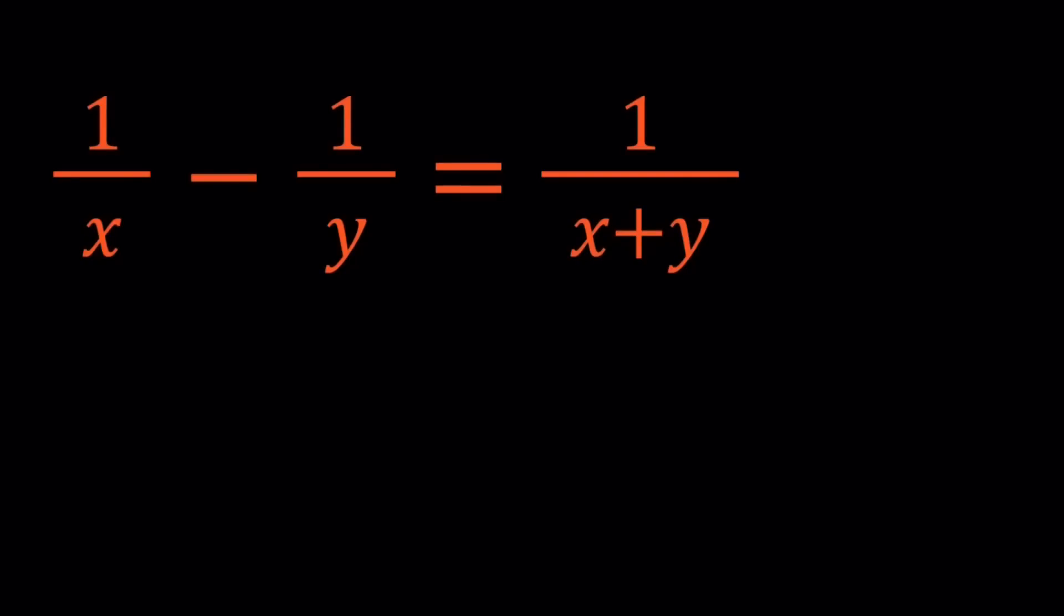Hello everyone. In this video we're going to be solving a rational equation. We have 1 over x minus 1 over y equals 1 over x plus y. We're going to be looking for x and y values. I'll be presenting two methods and at the end I'm going to show you a graph of this relation.